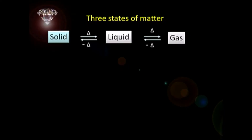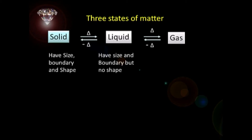Where do liquid crystals fit in the usual classification of matter? We are familiar with the interconversion of a solid into a liquid into a gas — the three states of matter. Solids have definite size, shape, and bounding surface. Liquids have size but do not have shape, though they have a bounding surface. Gases are totally random — no size, shape, or boundary.